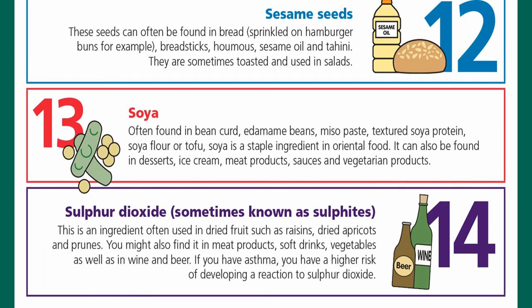The last three allergens are: sesame seeds, which can be found in bread, breadsticks sprinkled on hamburger buns, hummus, sesame oil, and tahini, sometimes toasted and used in salads. Soya, often found in bean curd, edamame beans, miso paste, textured soy protein, soya flour, and tofu — it's a staple in oriental food and can also be found in desserts, ice cream, meat products, sauces, and vegetarian products.